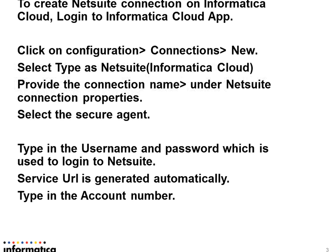Creating a NetSuite connection is similar to how you would create any other connection. Log on to Informatica Cloud, go to Configuration, Connections, choose New and select the type as NetSuite. You will have to provide the standard information: connection name, connection properties, and the secure agent that you will be running this job from, and of course the credentials for NetSuite along with the account number.